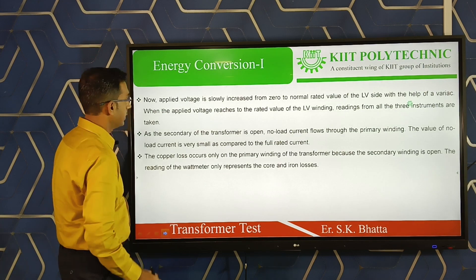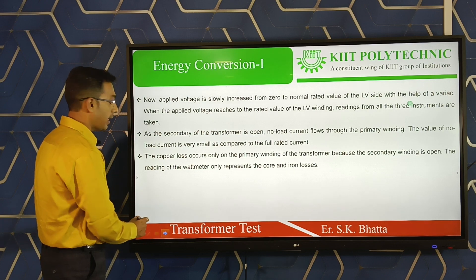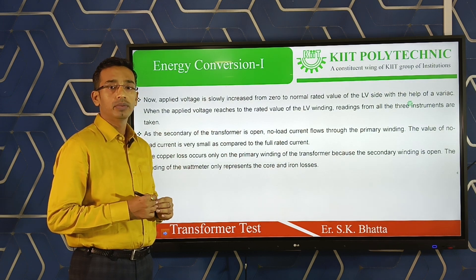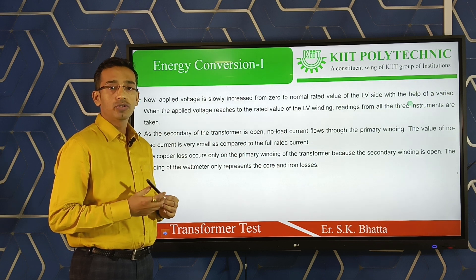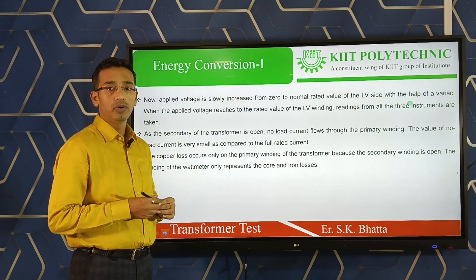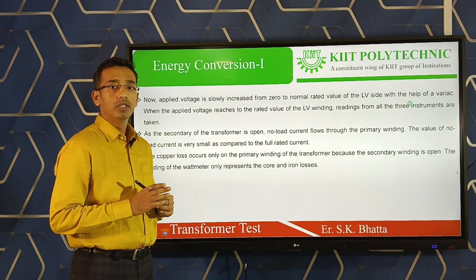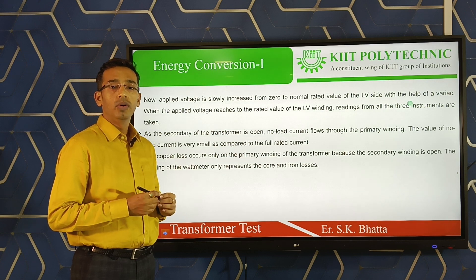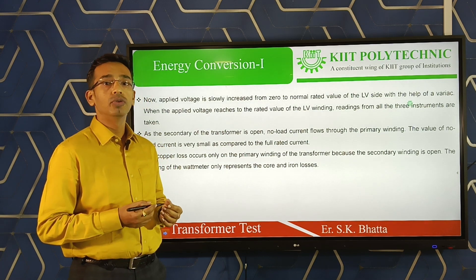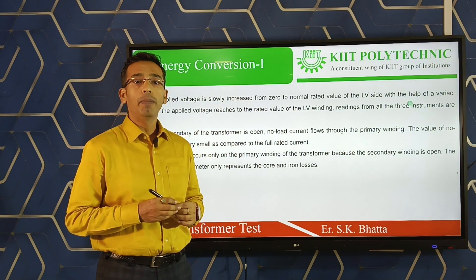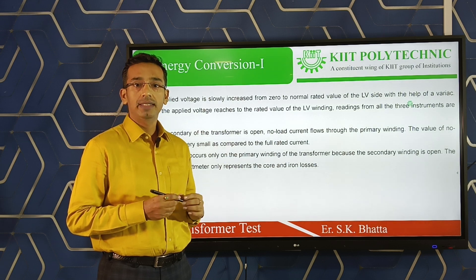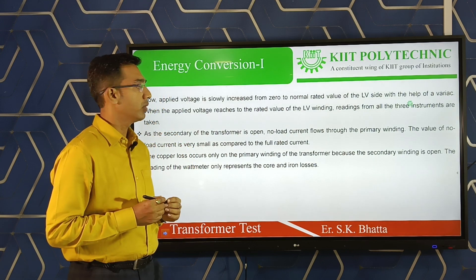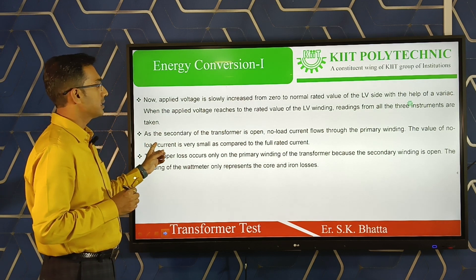For conducting the test, rated voltage is applied through a variac — an auto-transformer that varies the voltage. We vary the voltage up to the rated value and then take readings: the ammeter reading gives current, the voltmeter gives voltage, and the wattmeter gives power. The power reading from the wattmeter in the open circuit test represents the iron loss of the transformer.